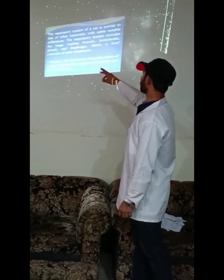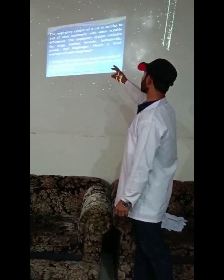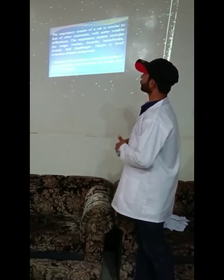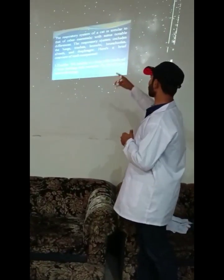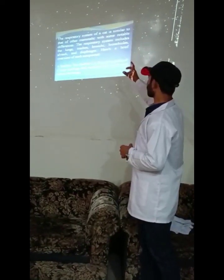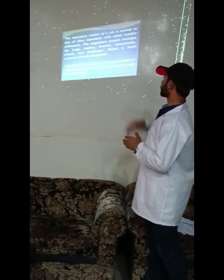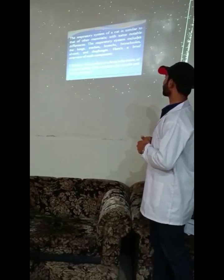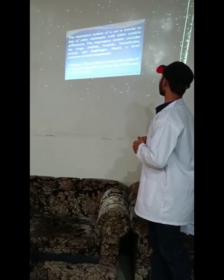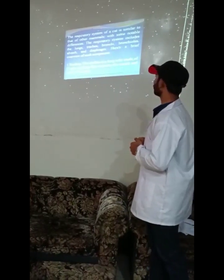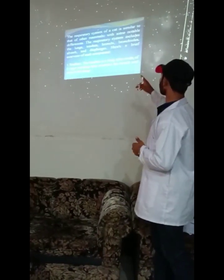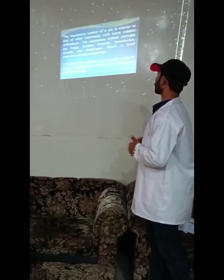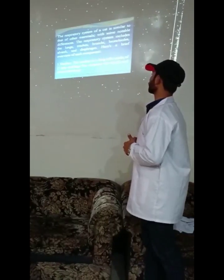Here are the components of the respiratory system. First of all, the trachea. It is a long tube reinforced with C-shaped cartilage, and it connects the mouth and nose to the lungs.